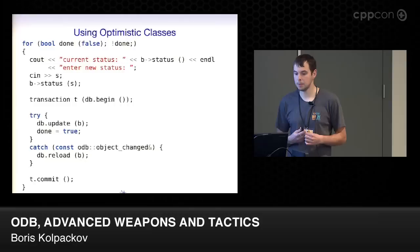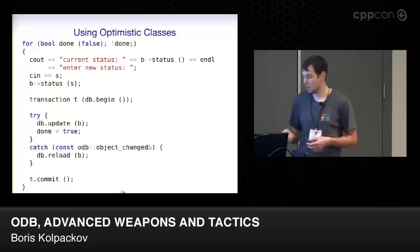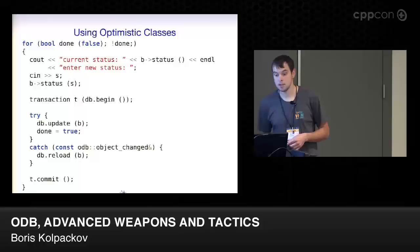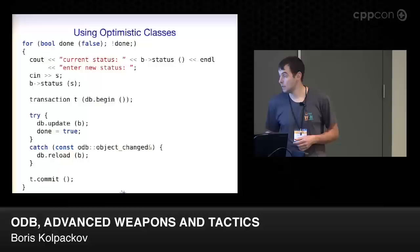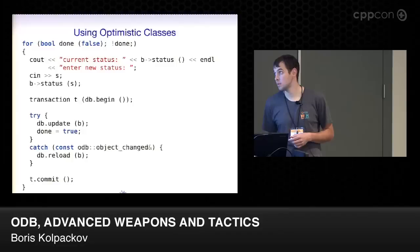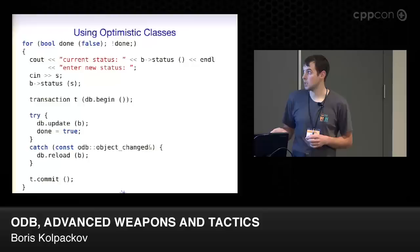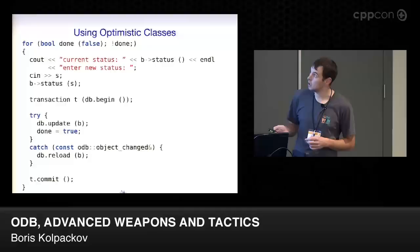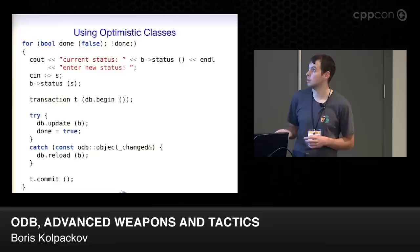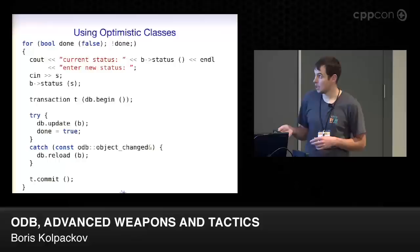To use optimistic concurrency with ODB: first, mark the object as optimistic with a pragma. We also add an object version data member marked as object version — ODB manages it completely automatically, though we can use it for debugging. Then we use a recovery loop in our transaction. We show the user the current status and ask for a new one. We start a transaction and try to update. If nobody changed the object, the versions match, the update succeeds, and we're done. If the object was changed by someone else, the update fails with an 'object changed' exception — in which case we reload the state and continue from the beginning. This is why it can be expensive: we may have to reload and redo all the work.